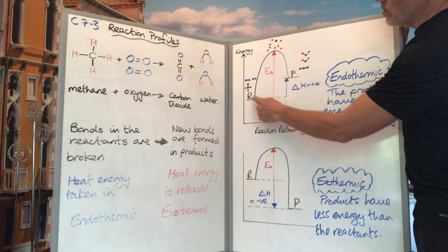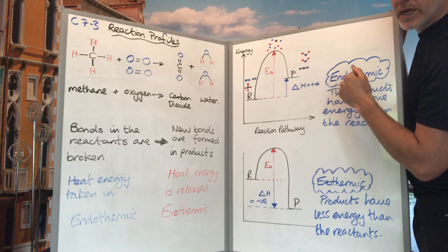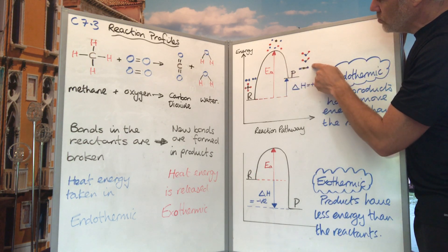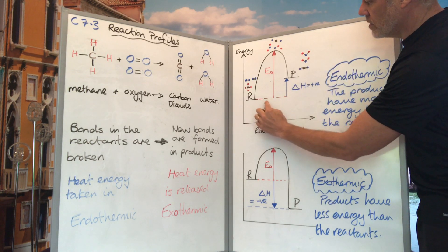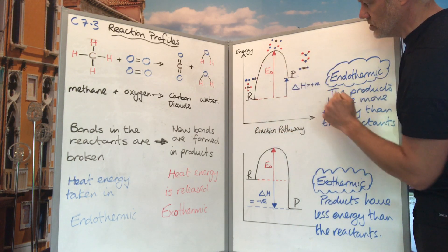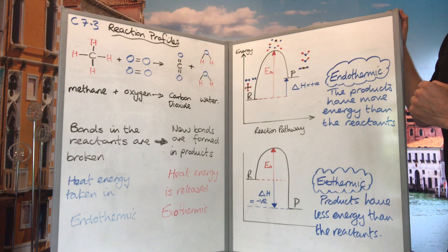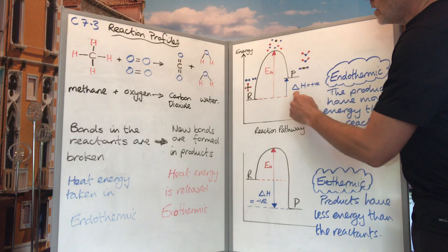We start off with reactants — methane and oxygen — and we need to put energy in to break those bonds. All the atoms end up floating around with no bonds between them, and then new bonds form to produce our products: carbon dioxide and water. The energy required to break the bonds is shown by an arrow, known as the activation energy — the amount of energy required for the reaction to occur.